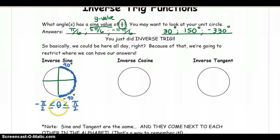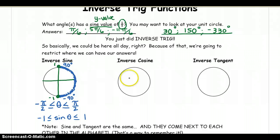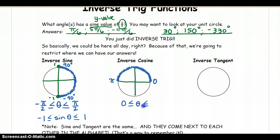That means our answers for the sine of theta will have to be between negative 1 and 1, because the highest it could be is 1 and the lowest is negative 1 for the y values. Now inverse cosine works a little differently. For inverse cosine, the answer should be between quadrant 1 and quadrant 2 — basically between 0 degrees (zero radians) to 180 degrees (π radians). So theta will be between 0 and π, and cosine theta — which is the x value — will be between negative 1 and 1.